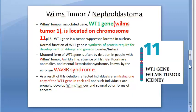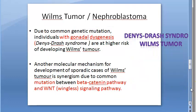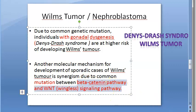To summarize etiopathogenesis: mention general factors like congenital anomalies, malignancies, and monozygotic twins. Then remember the WT1 gene on chromosome 11 which, when mutated, affects proteins for kidney and gonad development. These people can present with WAGR syndrome — Wilms tumor, aniridia, genitourinary anomalies, and mental retardation. Also mention Denys-Drash syndrome with gonadal dysgenesis, and sporadic mutations in the beta-catenin and WNT signaling pathways.